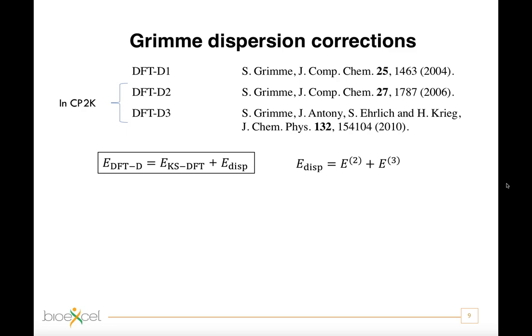The correction employed in the tutorial is the DFTD2 scheme, which, unlike the DFTD3, contains only two-body terms. In this dispersion correction scheme, the sum is over all the pairs of atoms.